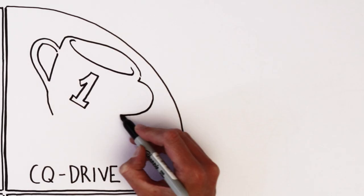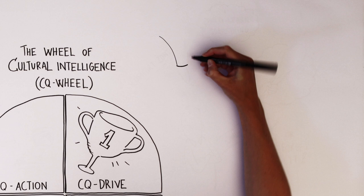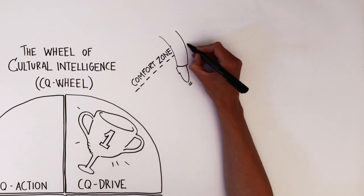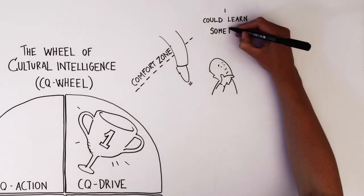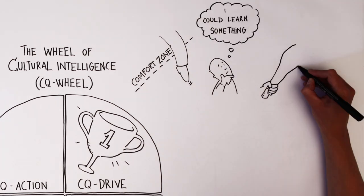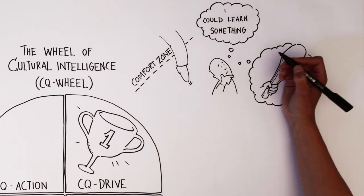First part of the wheel is CQ drive. This is your motivation and confidence to work outside your own cultural comfort zone. Do you think you can learn anything from being in another culture than your own, or do you let your stone age brain tell you that it's much more valuable to be around people like yourself?